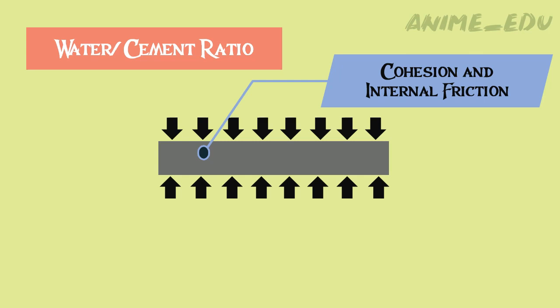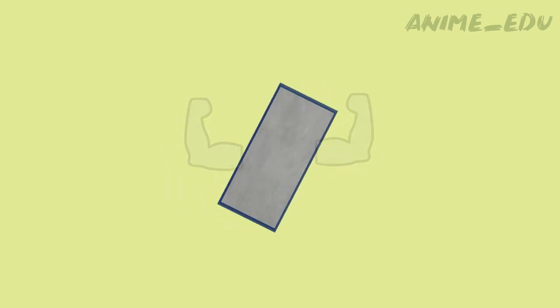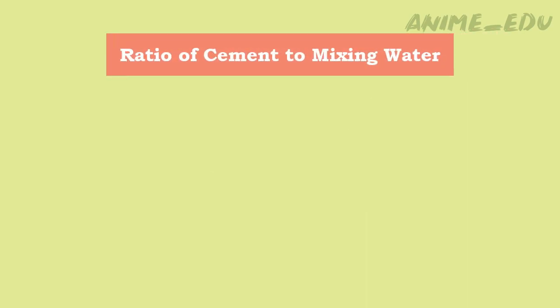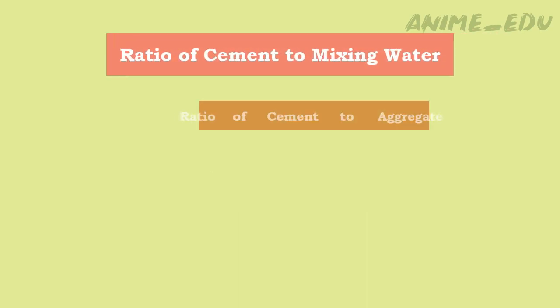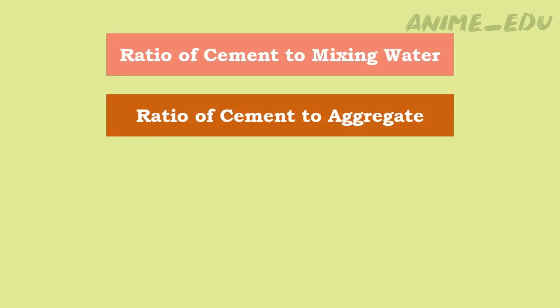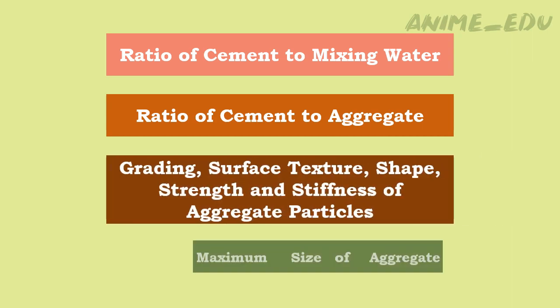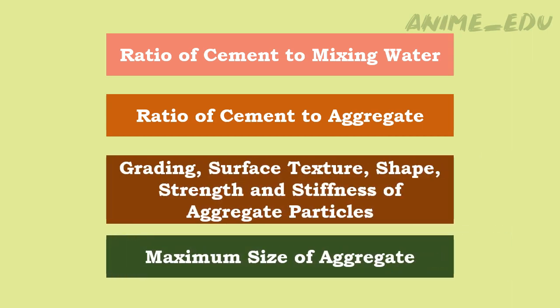Besides the water-cement ratio, the strength of concrete is influenced by the following factors: ratio of cement to mixing water, ratio of cement to aggregate, grading, surface texture, shape, and strength of aggregate.